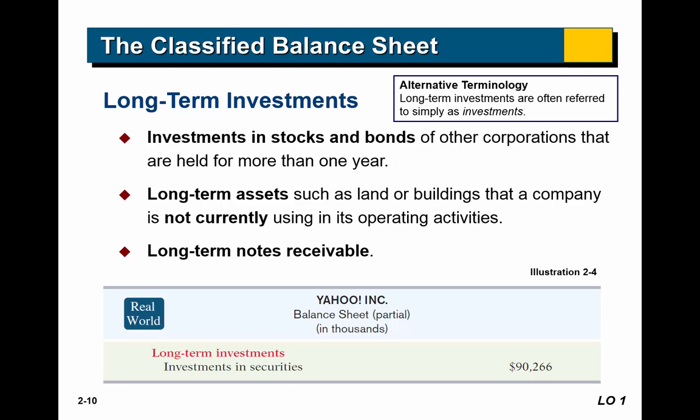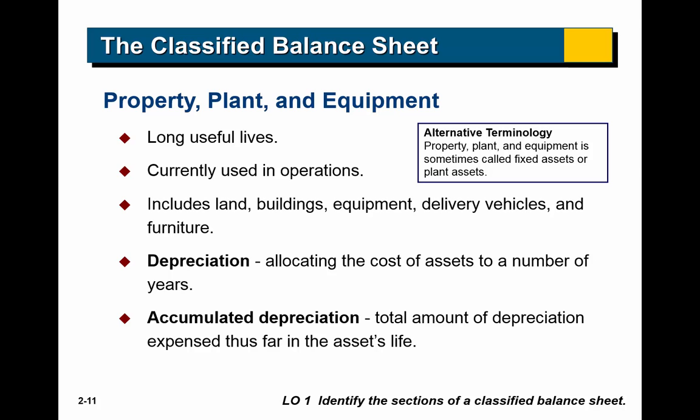Long-term investments are investments we expect to not turn into cash within the next year. This includes investments in stocks and bonds of other companies that we've purchased for the purpose of investing, as well as long-term assets such as land or buildings that we're not using for operations. That's an important distinction — if we purchased a building to put our store in, that's an operating asset. If we purchased a building to hold for 10 years and then sell at a profit, that's an investment. Our intent matters when classifying the asset. Also included are long-term notes receivable — money owed to us that we don't expect to collect within the next year.